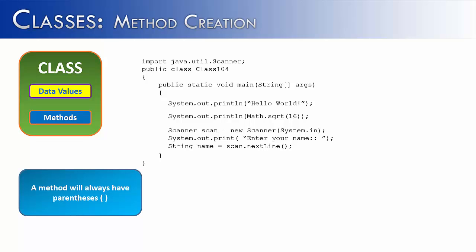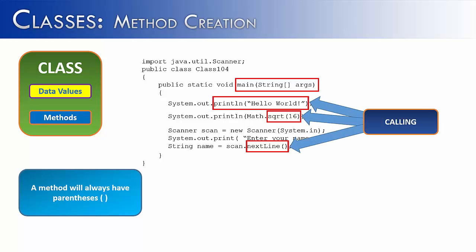When talking about classes, methods are essential. I have a basic program here that has a bunch of methods in it, and we can always identify methods by having parentheses after it. I've put the different methods in the red boxes: the println method from the system class, the square root method from the math class, and the nextLine method from the scanner class.